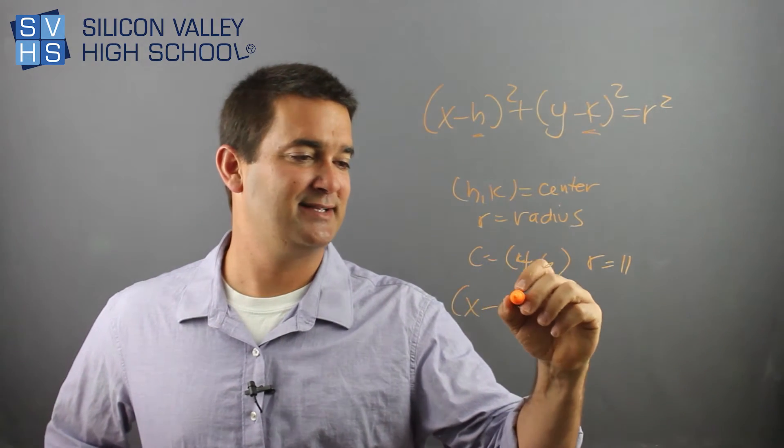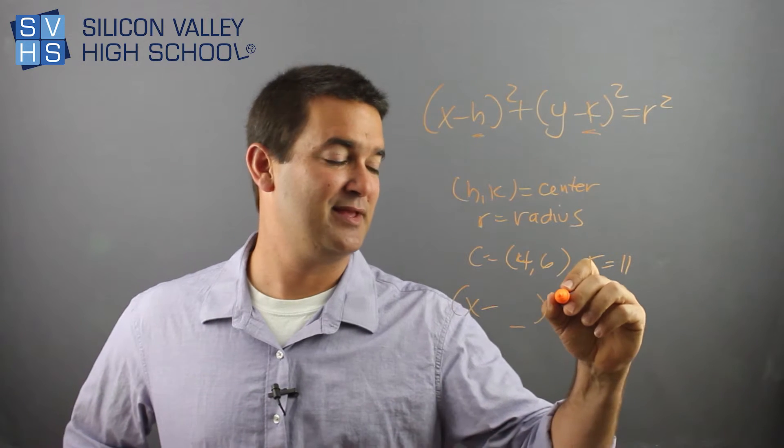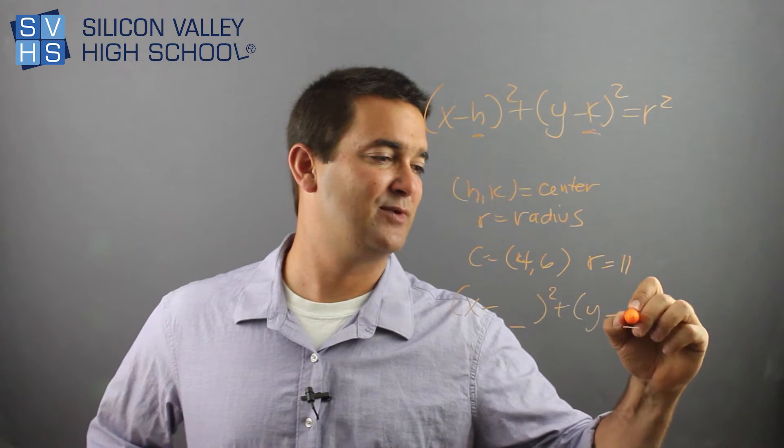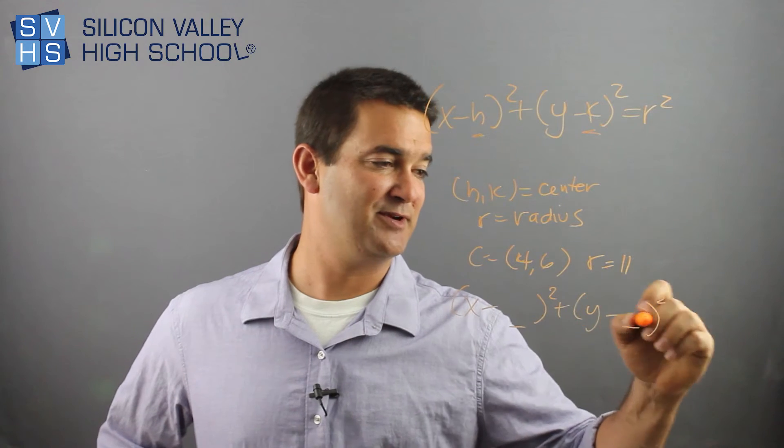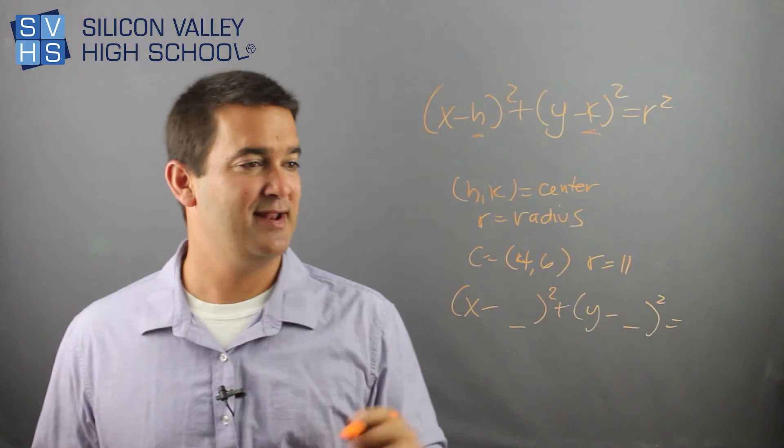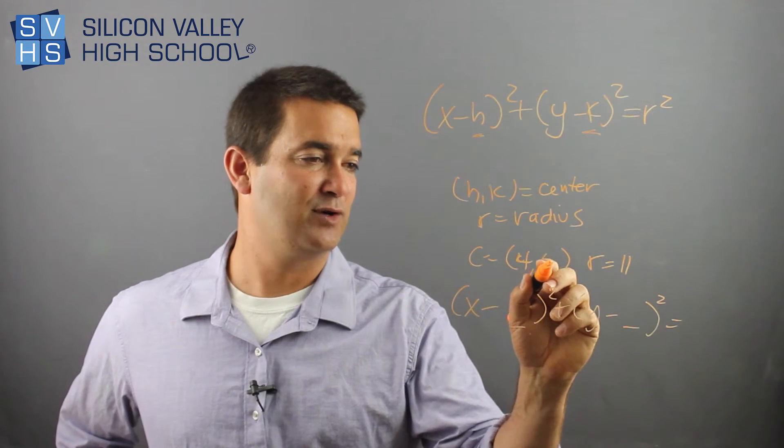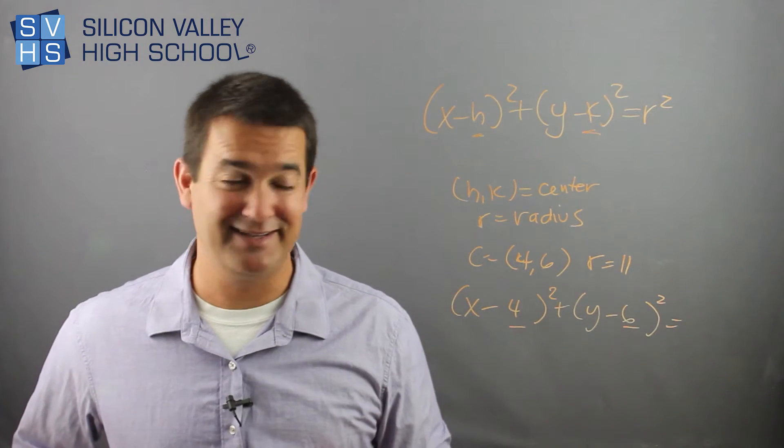All you do is x minus whatever is your h squared plus y minus whatever your k is, equals r squared, right? So h, k, 4, 6, done. Just put them right in there blindly.